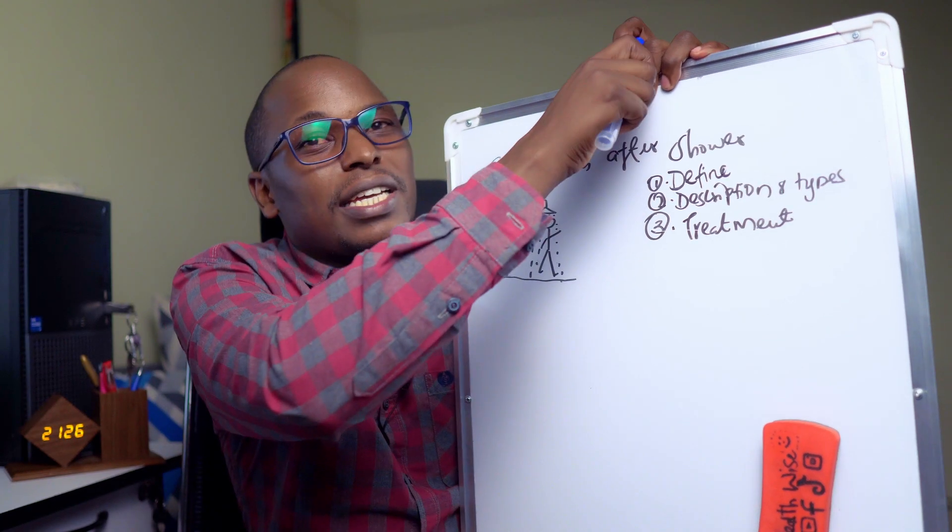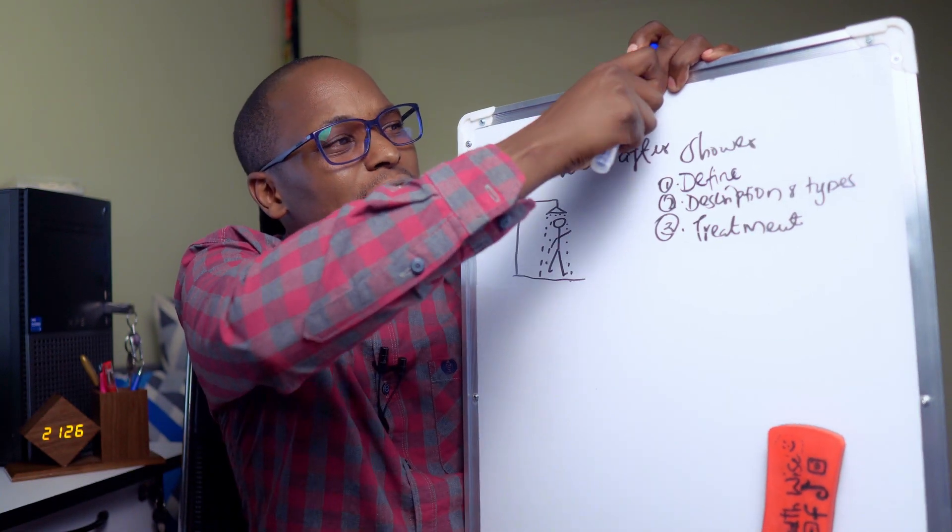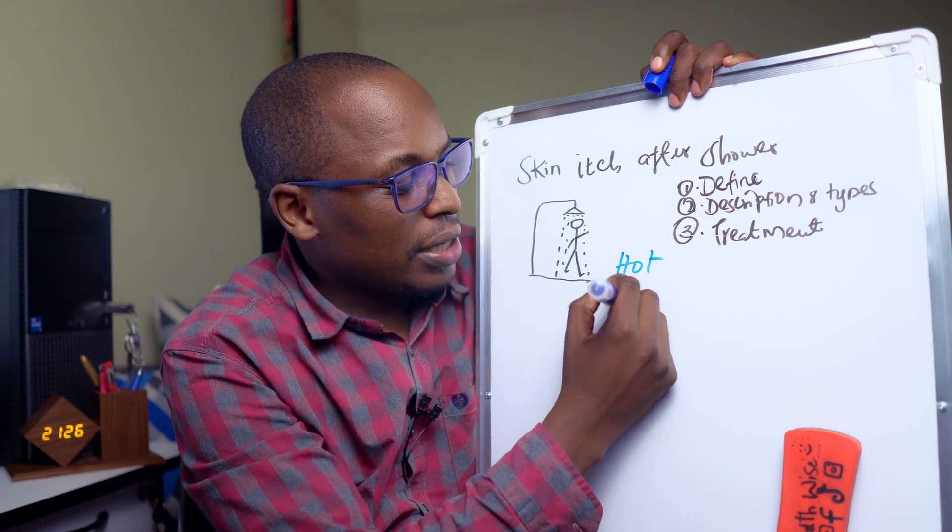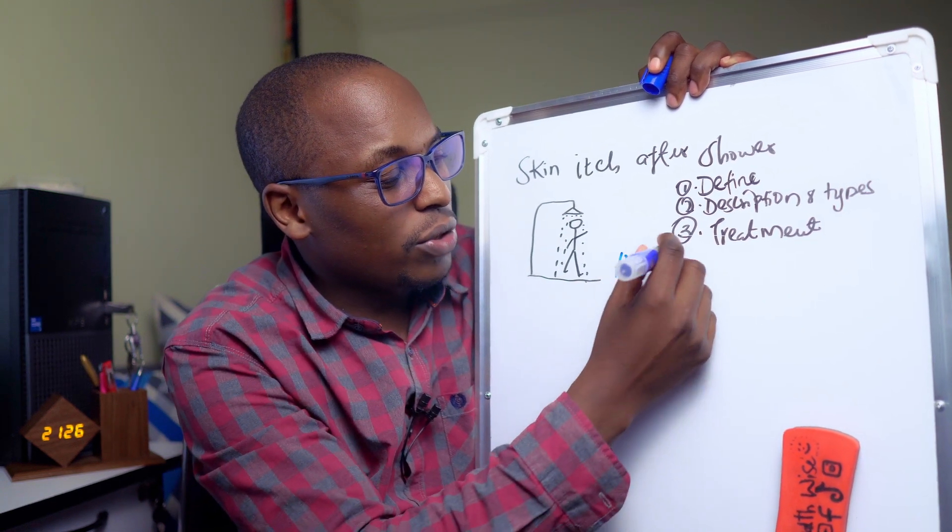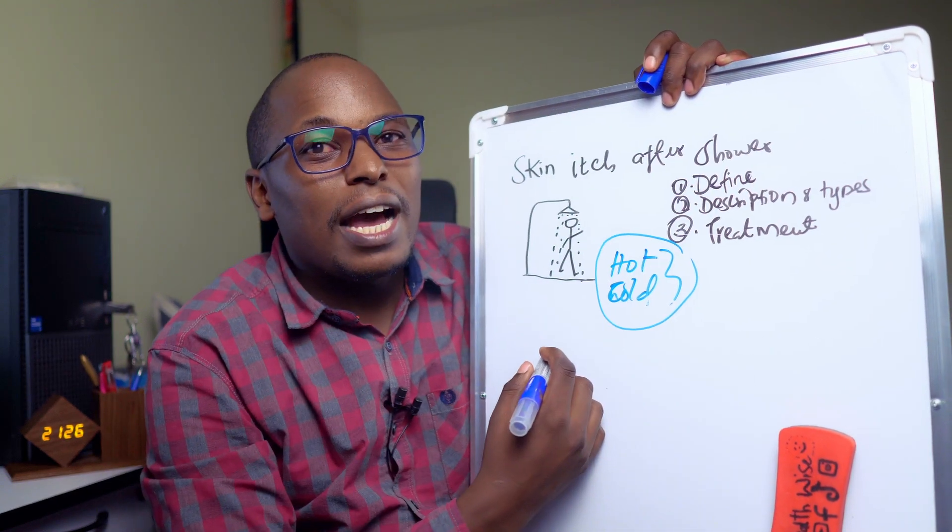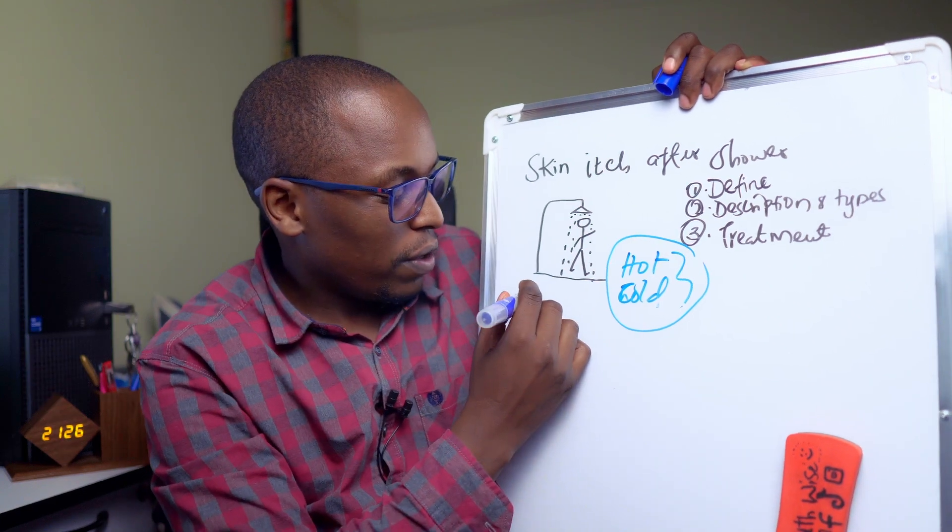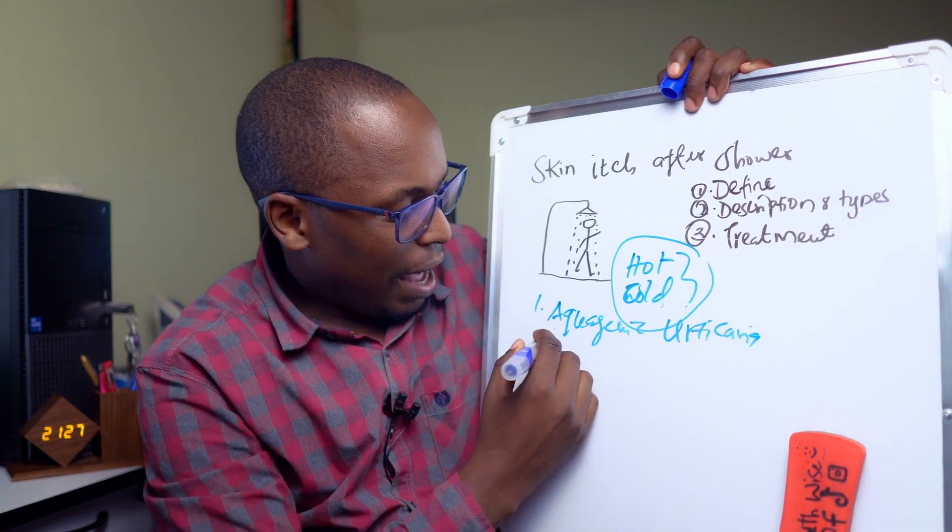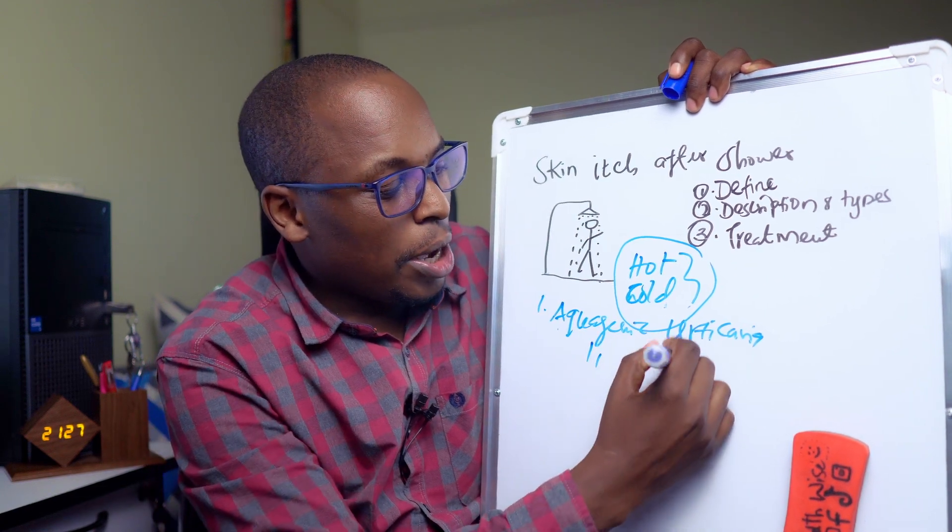We have three categories of people: those who react with hot water, those that react with cold water, and those that react with both. The whole condition is divided into two: aquagenic urticaria and aquagenic pruritus.